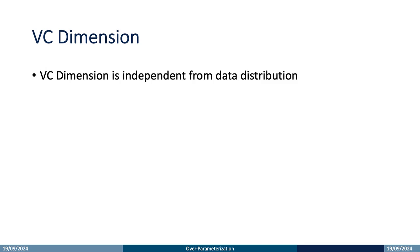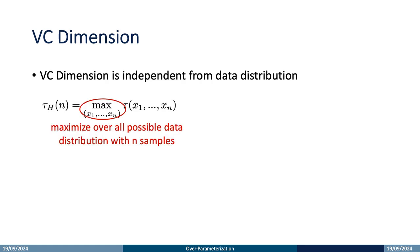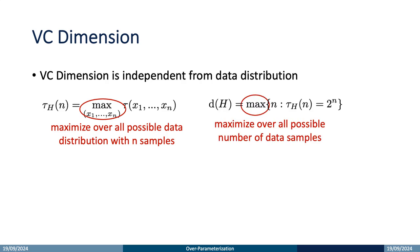It is important to note that the VC dimension is independent of the distribution of data samples and the number of data samples. This is because the growth function measures the maximum possible number of hypothesis groups over n samples x1 through xn. Similarly, the VC dimension determines the maximum number of data points that can be shattered by the hypothesis set h. Therefore, the VC dimension depends only on the complexity of the hypothesis space h, and is independent of n and the specific data points x1 through xn.